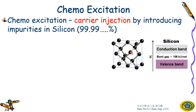Chemo excitation means carrier injection by introducing impurities into silicon. Impurity in silicon means we put in different atoms — different types of atoms — to replace the silicon atoms.